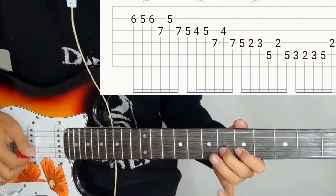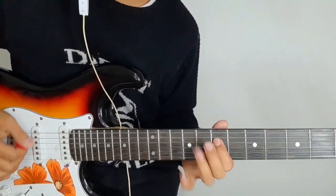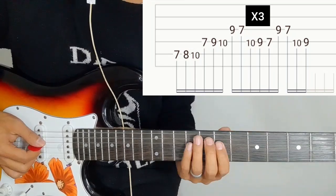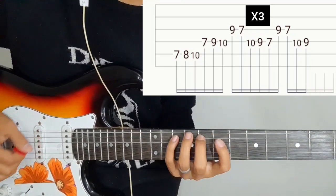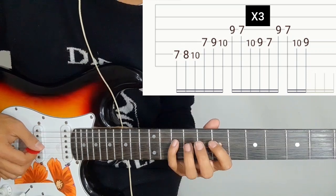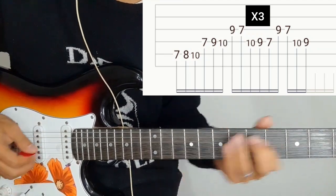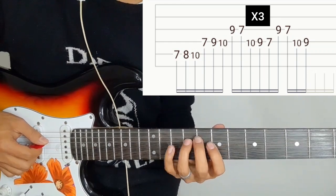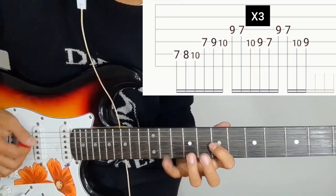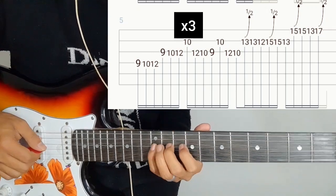This is another part. On the 4th string, 7-8-10, then 4th string 7-9-10. Then 3rd string 9-7, 4th string 10-9-7.